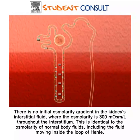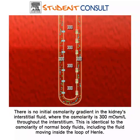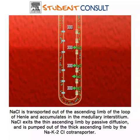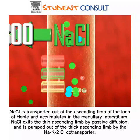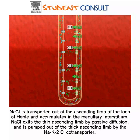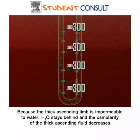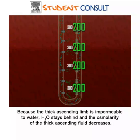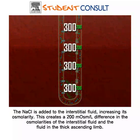There is no initial osmolarity gradient in the kidney's interstitial fluid, where the osmolarity is identical to that of normal body fluids. The first step involves sodium leaving the ascending limb, either by passive diffusion in the thin ascending limb, or by the NAK2CL co-transporter in the thick ascending limb. Because the thick ascending limb is impermeable to water, water stays behind and the osmolarity of the thick ascending fluid decreases. Sodium is added to the interstitial fluid, increasing its osmolarity.